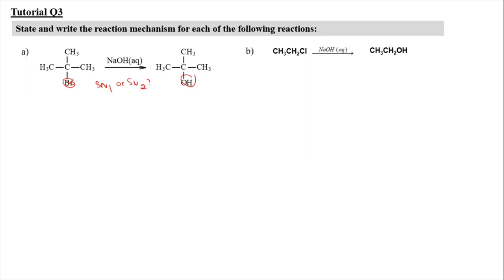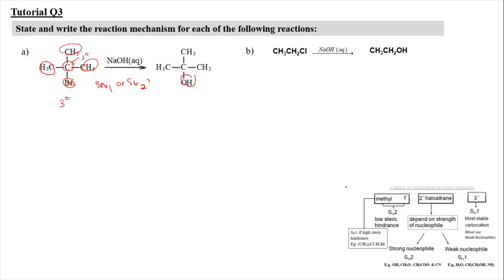In order to determine the mechanism, we look at the class of the hydrocarbon. This haloalkane is a tertiary haloalkane because the carbon attached to the halogen is attached to three alkyl groups. According to the flow chart given in the lecture, a tertiary haloalkane will undergo SN1 mechanism. SN1 mechanism has two steps, and this applies especially for haloalkanes.